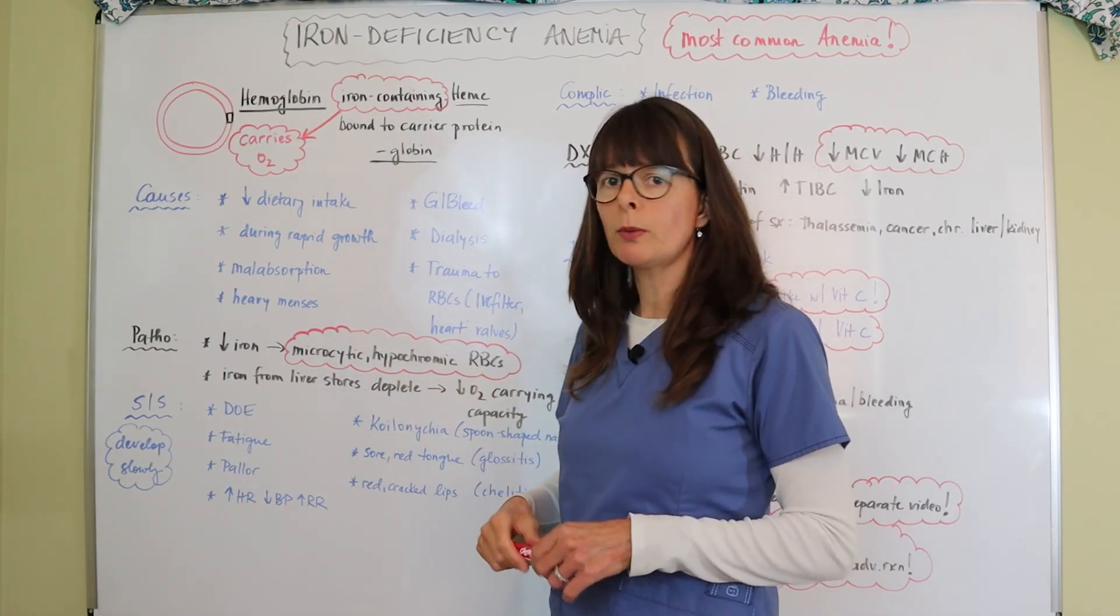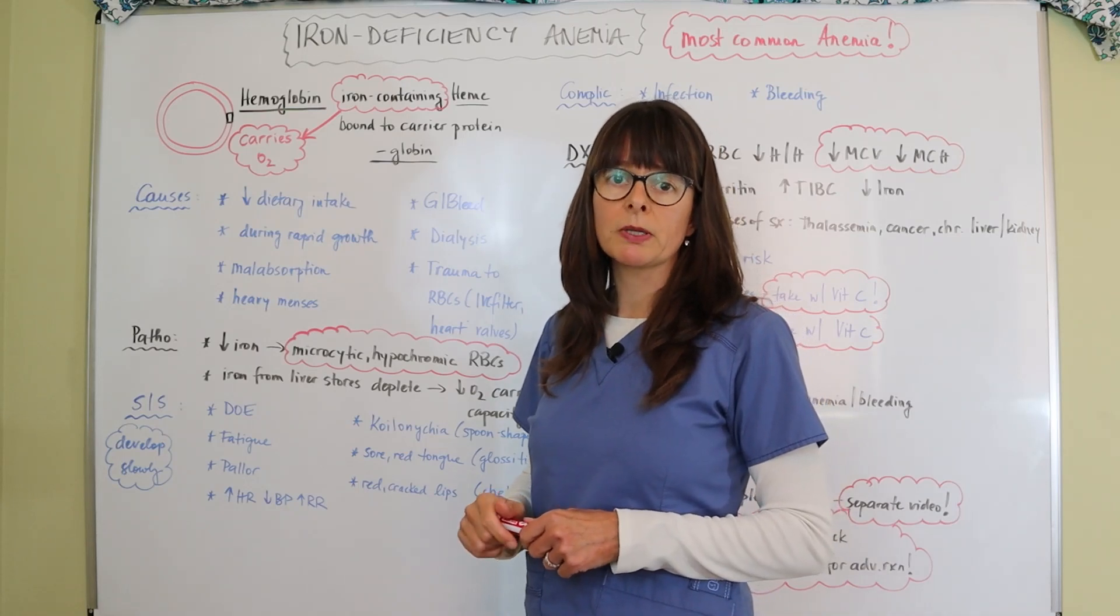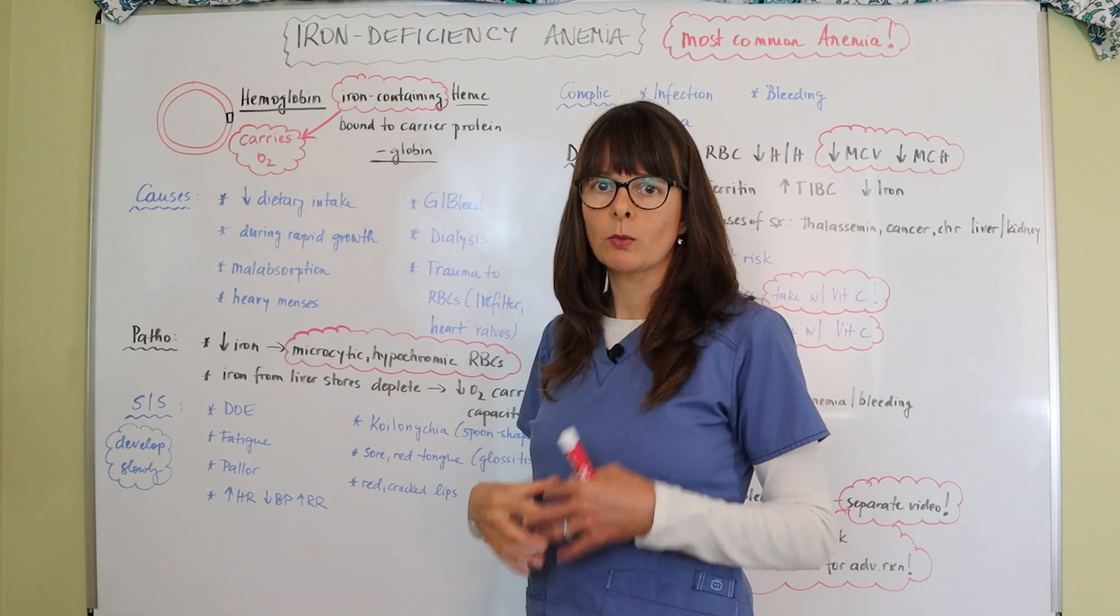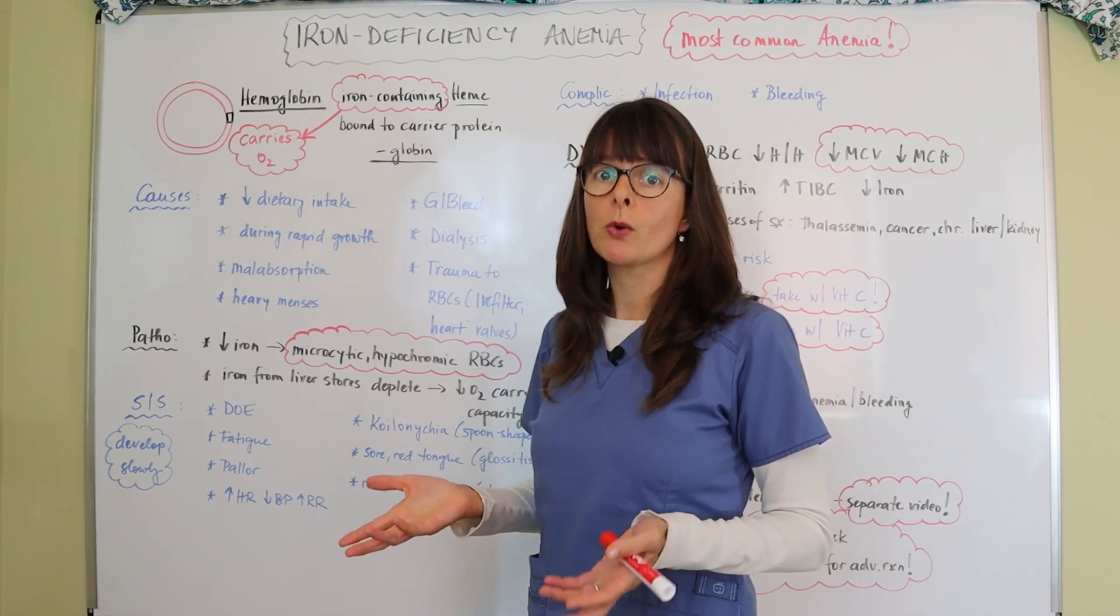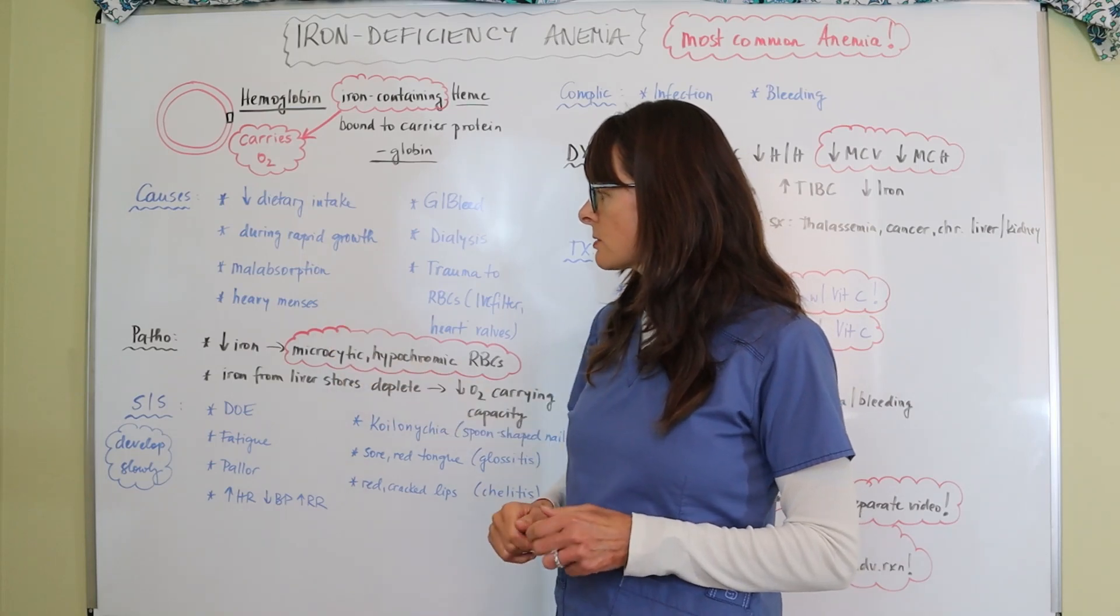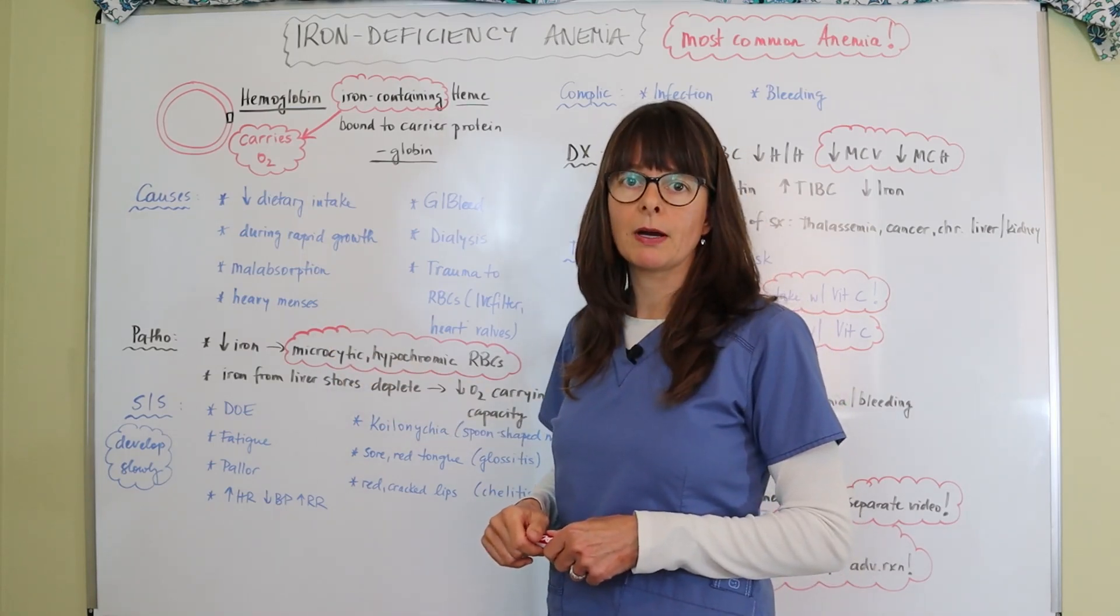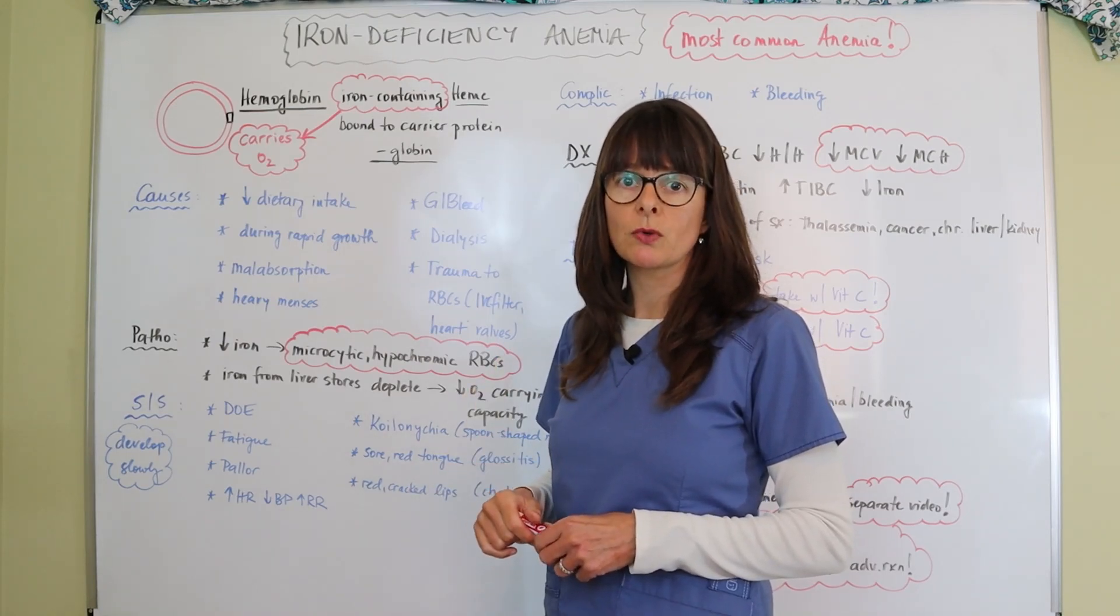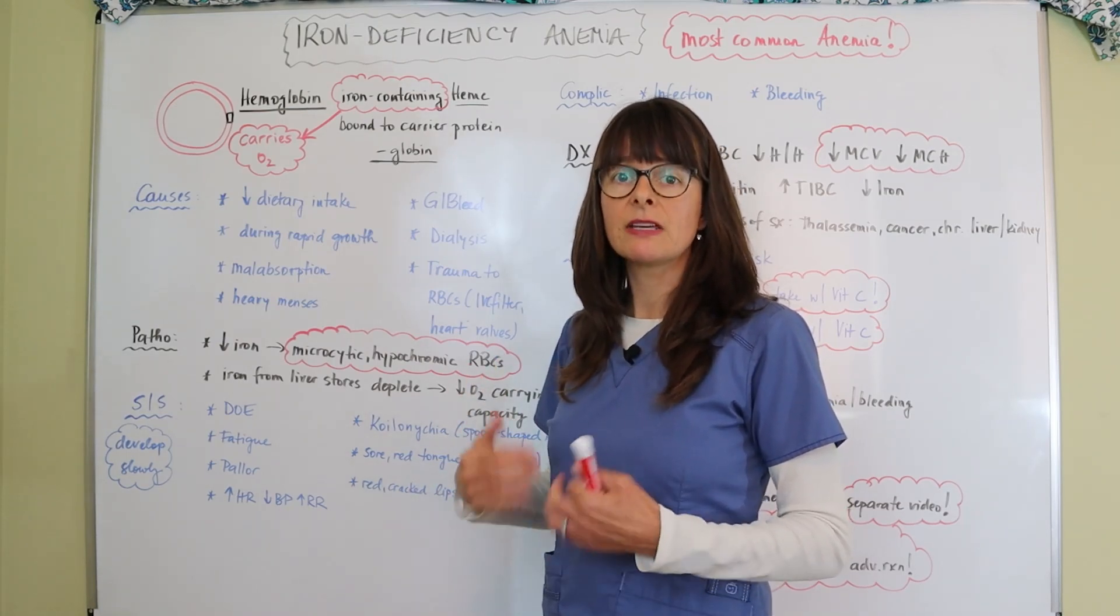When there's any kind of malabsorption, because iron gets absorbed in the small intestine, so if we have any issues with the small intestine where the iron usually gets absorbed we're going to be lacking the iron that we need. Heavy menses, so this is for premenopausal women who lose blood through their menstrual cycle that is very heavy and therefore they can become iron deficient.